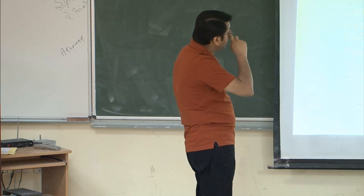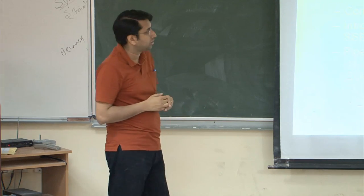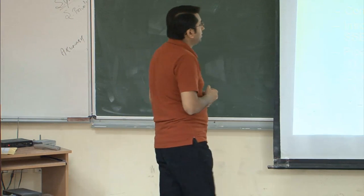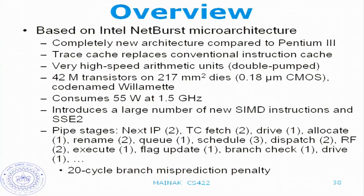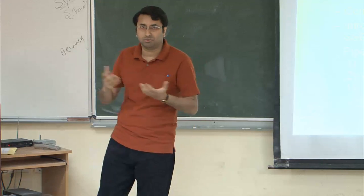In Pentium 4, trace caches were introduced, replacing the conventional instruction cache. It uses very high-speed arithmetic units, often called double-pumped ALUs. Essentially, if your processor runs at 3 GHz, the ALUs operate at 6 GHz and can complete in half a cycle. Netburst had 42 million transistors on a 217 mm² die in 180 nm CMOS, which is fairly advanced compared to the MIPS R10K and R10000 from the mid-90s.